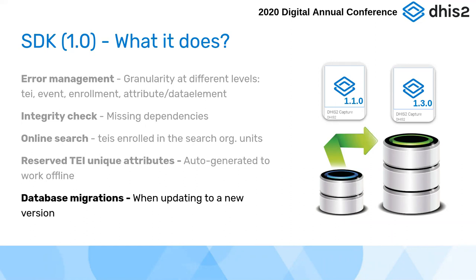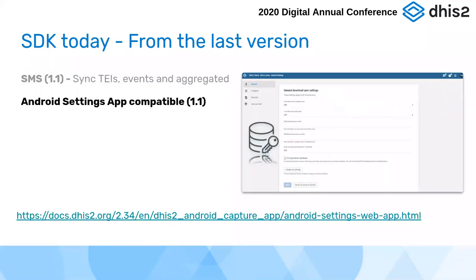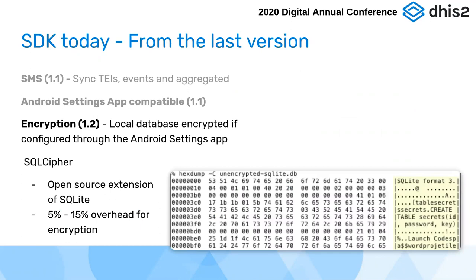In the last year we have introduced new features like SMS synchronization, which was very demanded by the community. There is now support for synchronizing tracker data and aggregated data via SMS. It uses a compression library served with the backend, so the number of SMS required and the size are optimized. The Android Settings app is new this year, and encryption — the capability to encrypt the local database on the device — was also introduced.